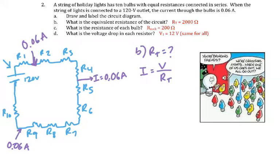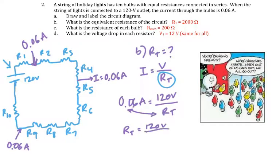I equals, wait - I is 0.06 amps, V is 120 volts, I'm looking for RT. I remember my trick that I'm gonna switch places if I'm finding whatever's on the bottom of the line. So I'm gonna do 120 volts divided by 0.06 amps.